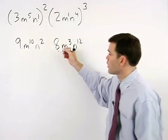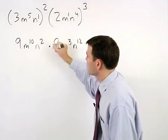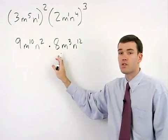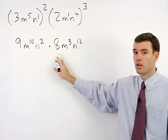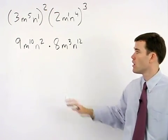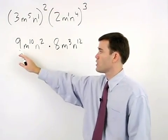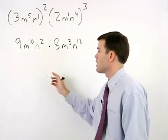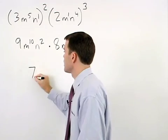Next, we multiply these two terms together. And to do that, we must apply the product rule from the last section. Remember we can simply multiply the coefficients together, 9 times 8 is 72.